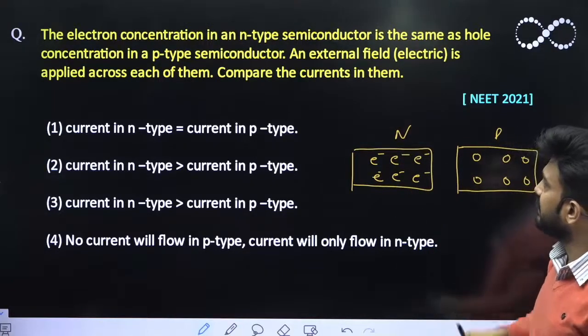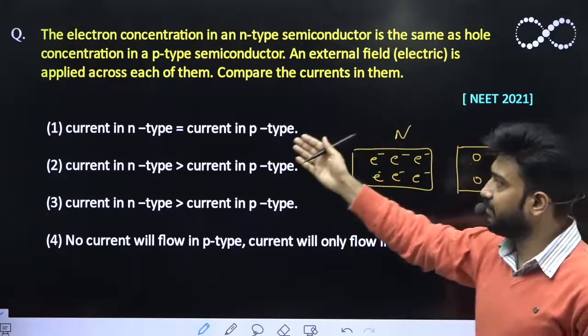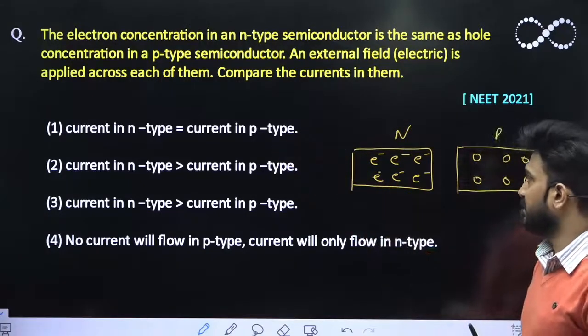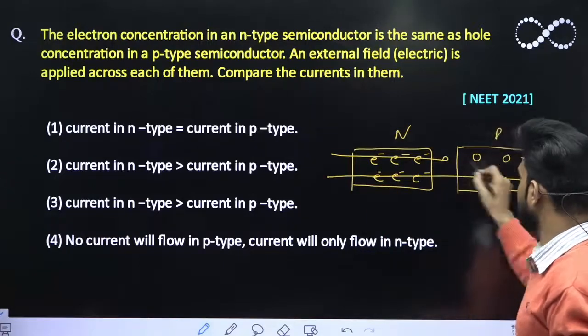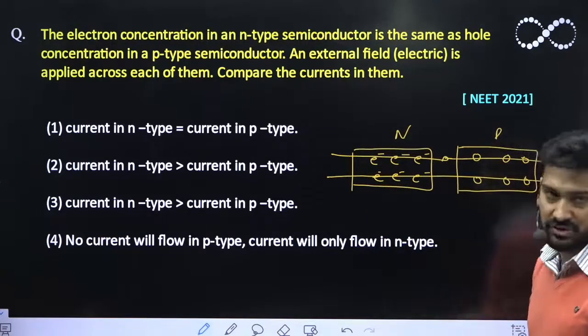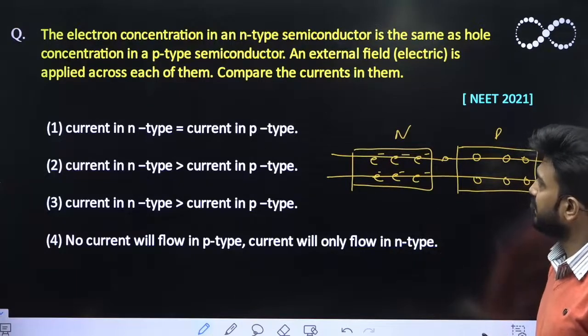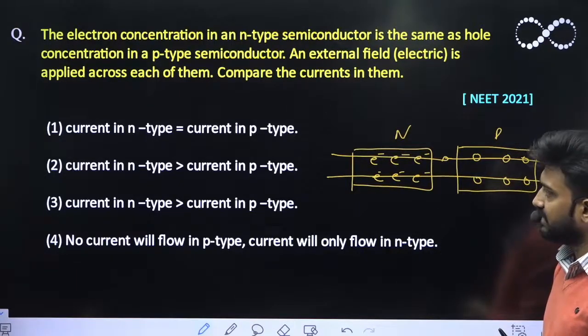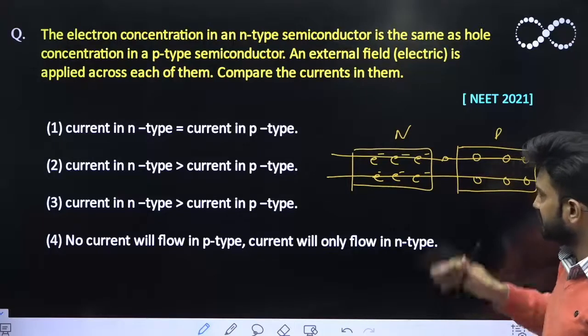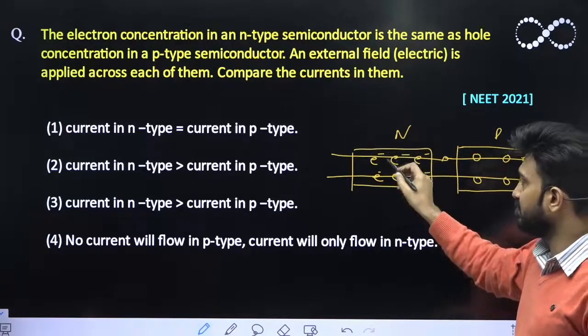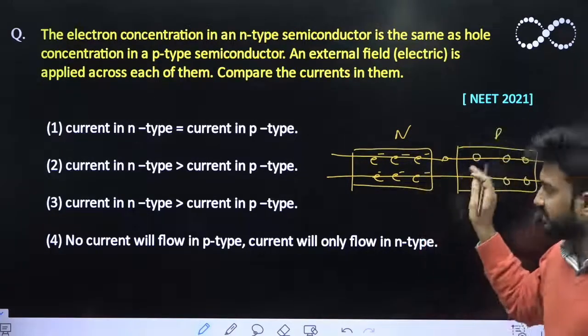Now it says an electric field is applied across each of them. That means suppose this is the electric field which have been applied across each of them and it is uniform electric field. So to compare the current in them.